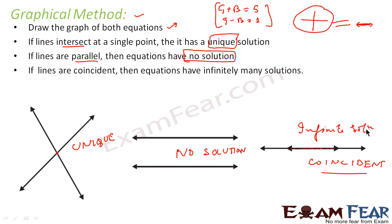Please don't mug up things — just try to clear your concept. Try to understand why, when lines intersect, they have a unique solution; when they are parallel, there is no solution; and when they are coincident, there are infinite solutions. The solution is nothing but the point where both lines meet.